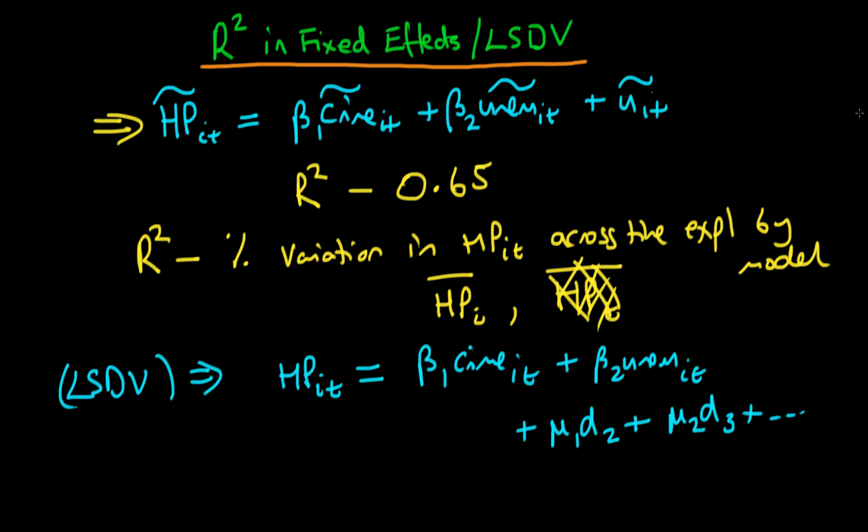And typically when we estimate this type of model via least squares dummy variables we will get a value of R squared which is very high, so it might be something like or something which is greater than let's say about 0.9.